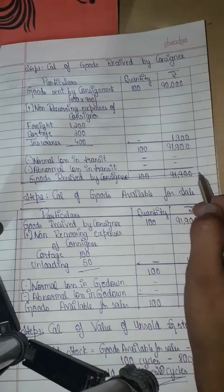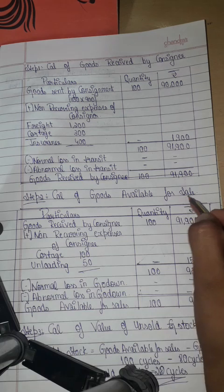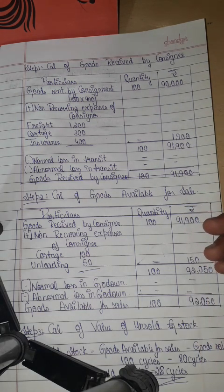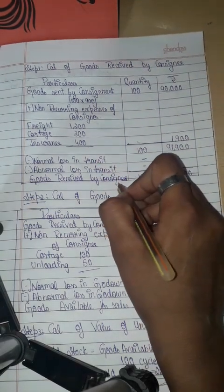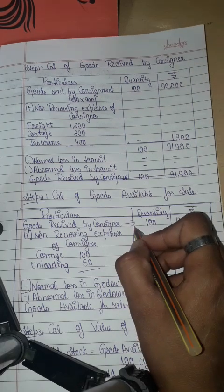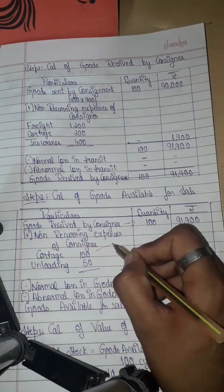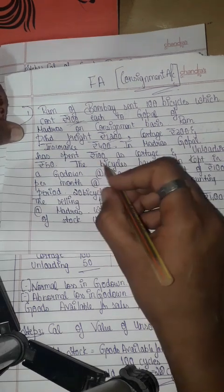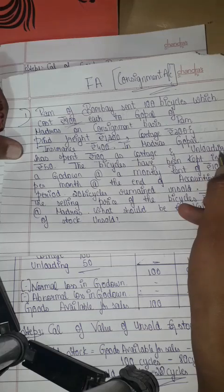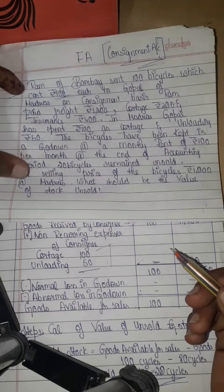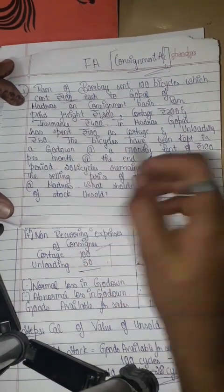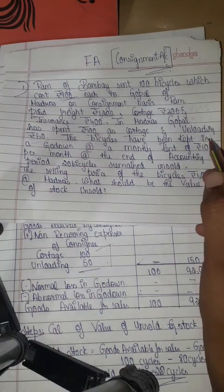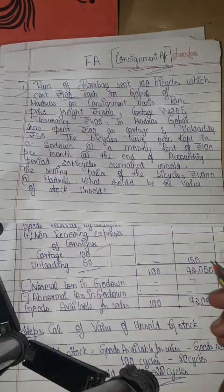The next step is the calculation of goods available for sale, using the same format with particulars, quantity, and amount. The first entry is the answer from step one. The second step is to add the non-recurring expenses of the consignee. In Madras, Gopal incurred Rs. 100 cartage and Rs. 50 unloading charges.